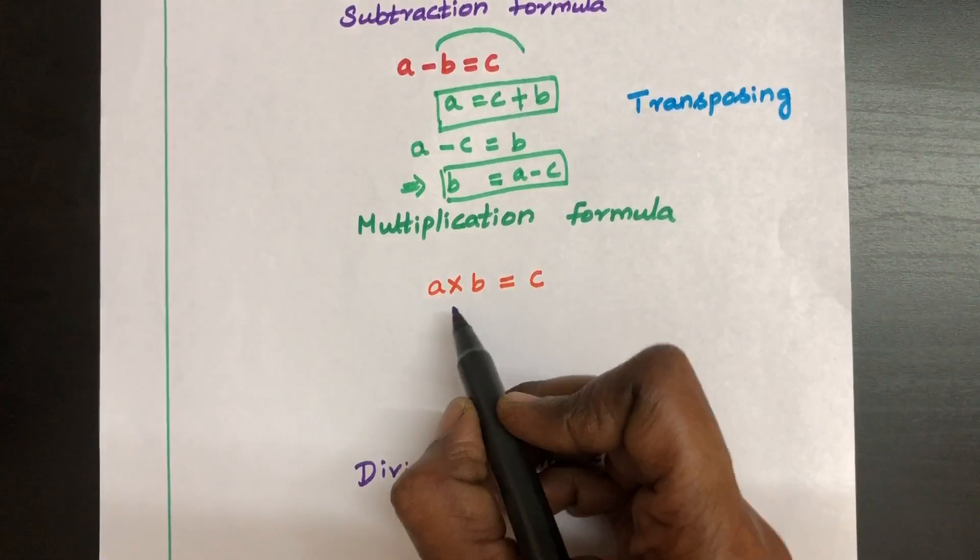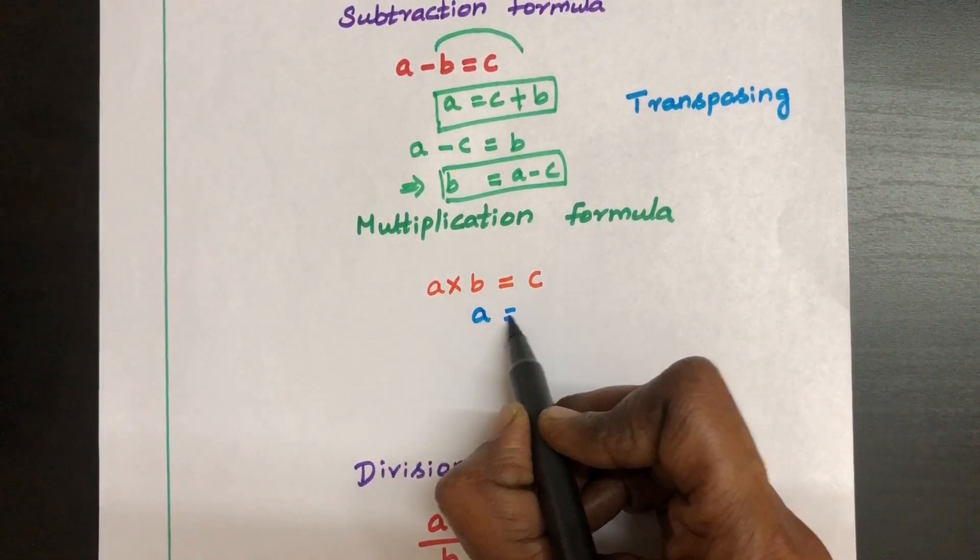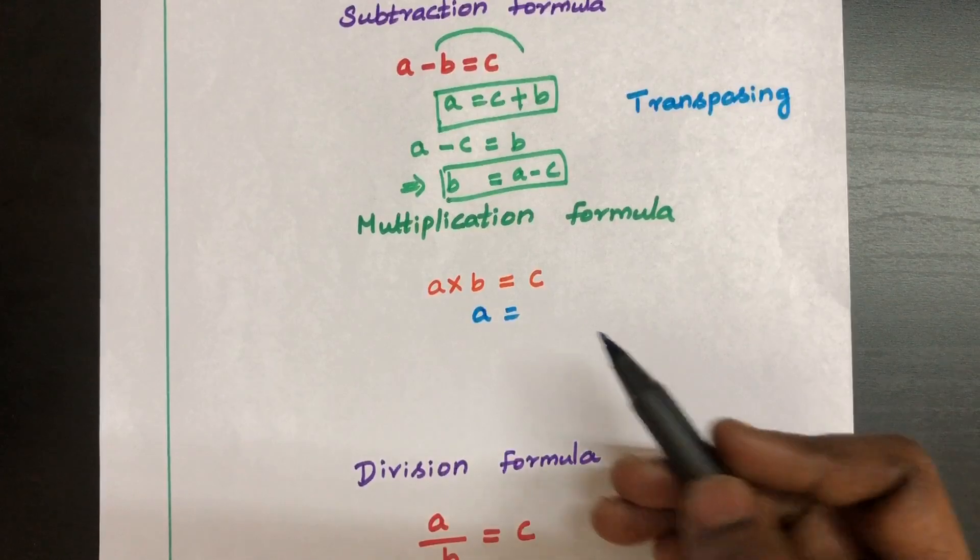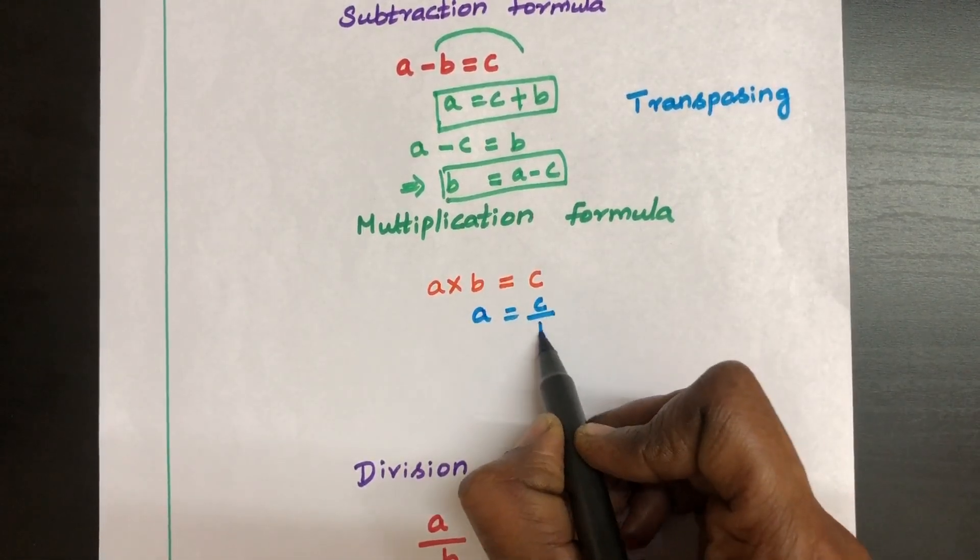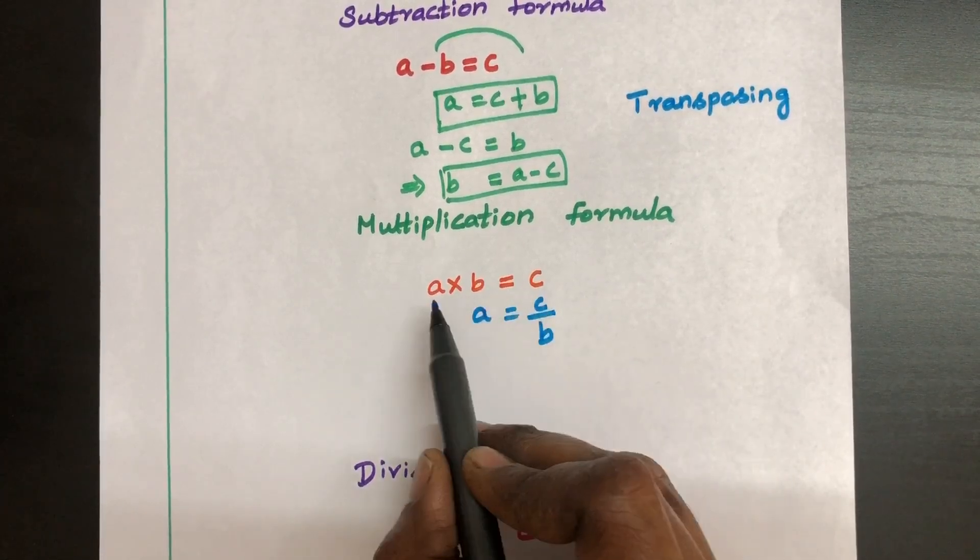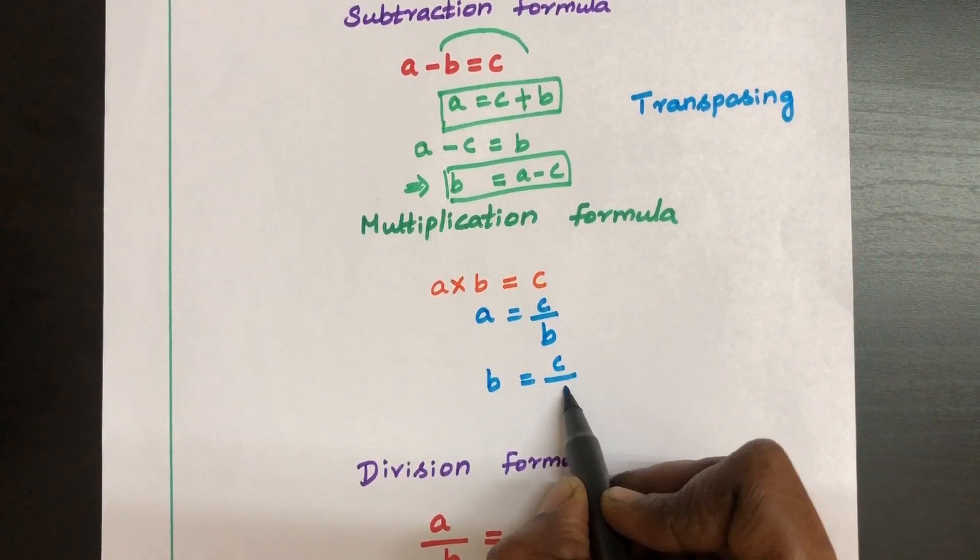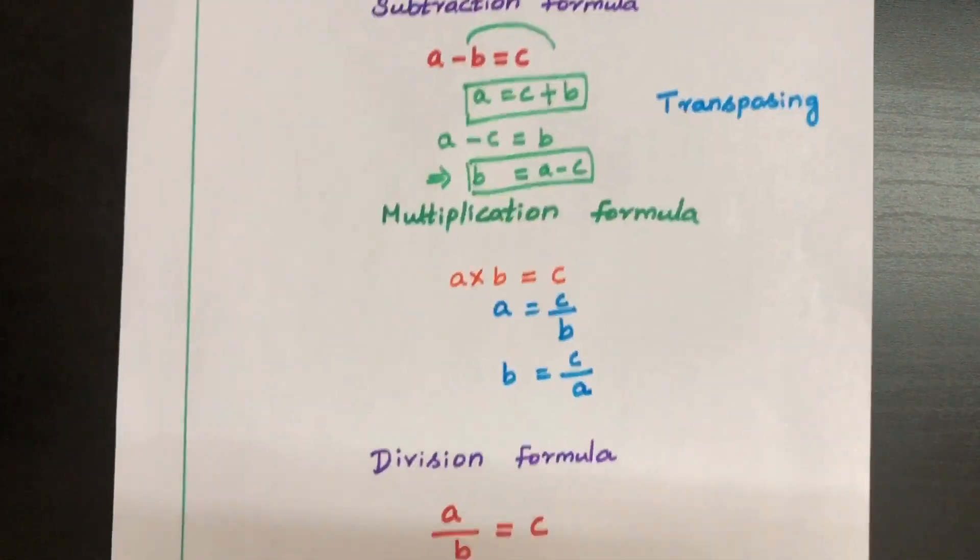Multiplication formula. How to do this? If you want to know what is A, if C and B values are given means C divided by B. If you want to know the value of B, C and A values are given, have B left side, C divided by A. This is called multiplication formula.